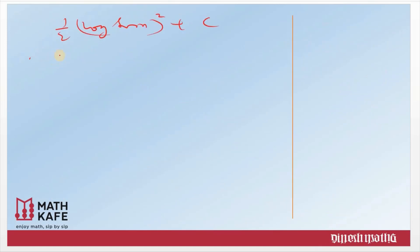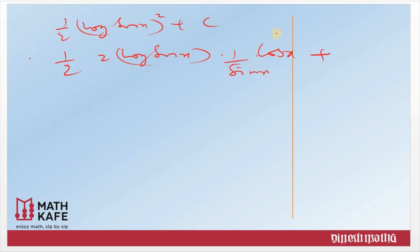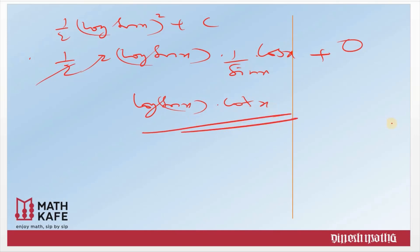Let us cross check the answer. Differentiating (1/2)(log(sin x))²: (1/2) · 2 log(sin x) · (1/sin x) · cos x. The 2s cancel, and cos x / sin x is cot x, giving log(sin x) · cot x. That is exactly our question. We are absolutely right and have done the question correctly.